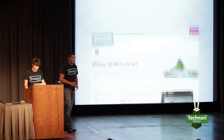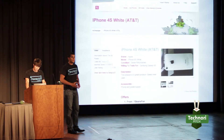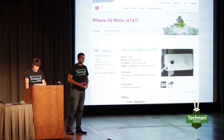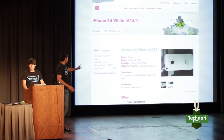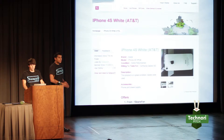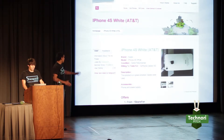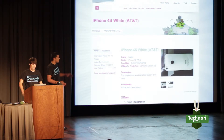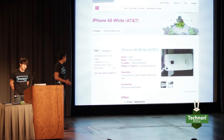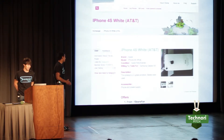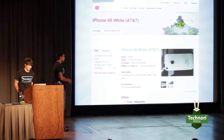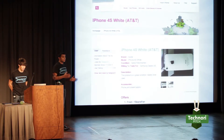Swappity is an online trading marketplace that easily enables you to post products just like an eBay listing. As you can see here, this user has posted an iPhone 4S. You're able to list the brand, model, condition, item you're willing to trade for, the description, accessories, as well as pictures.